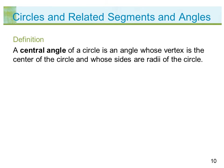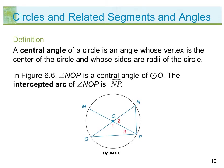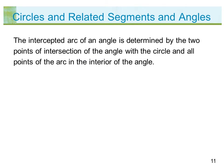A central angle of a circle is an angle whose vertex is the center of the circle and whose sides are radii of the circle. In figure 6.6, angle NOP is a central angle of circle O. The intercepted arc of angle NOP is arc NP. The intercepted arc of an angle is determined by the two points of intersection of the angle with the circle and all points of the arc in the interior of the angle.